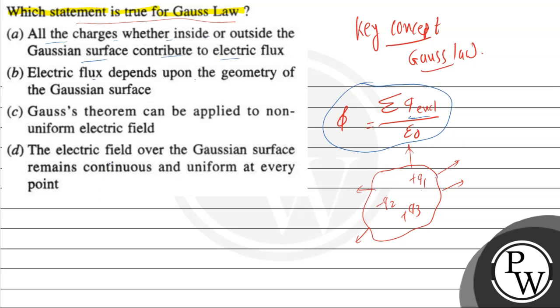Option C: Gauss theorem can be applied to non-uniform electric field. The electric field over the Gauss surface remains continuous and uniform at every point—every point per continuous nahin hota hai. So for us, C option is correct: Gauss law theorem can be applied to non-uniform electric field. So I hope you understand it very well, all the best.